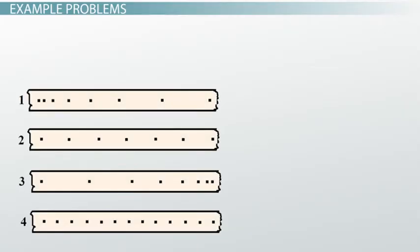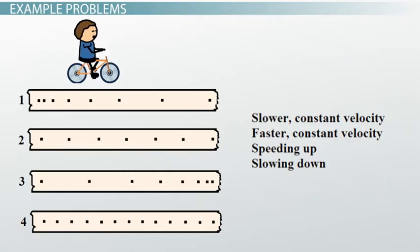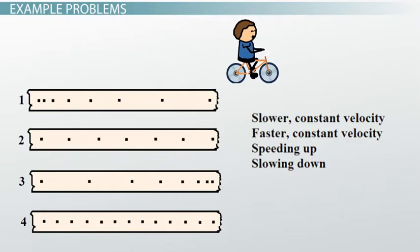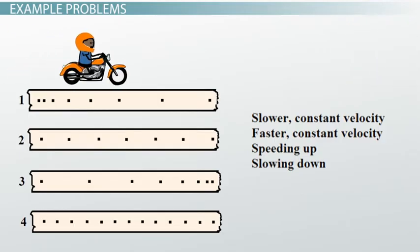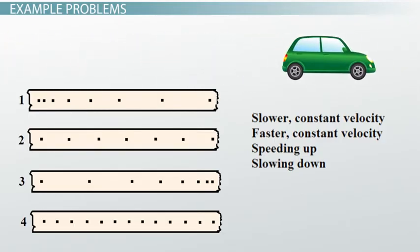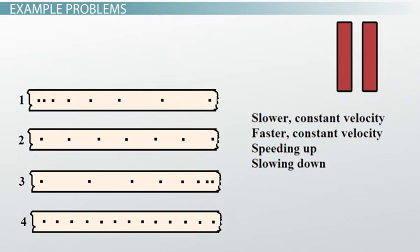Here are four ticker tape diagrams, where the tape was pulled to the left. Your job is to match the description to the diagram. One of the diagrams is a constant but relatively slow velocity. One is a constant fast velocity. One is where an object was speeding up. And one is where an object was slowing down. Now would be a good time to pause the video and write down your answer.